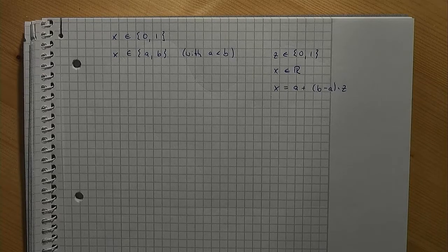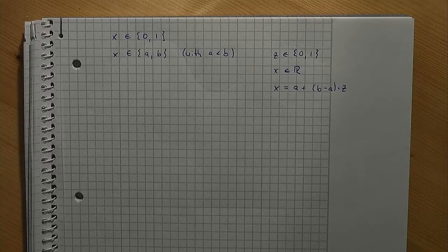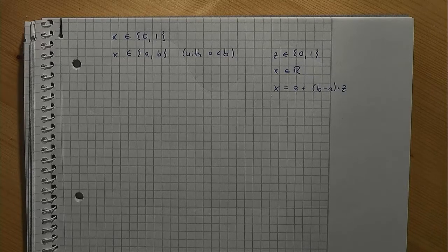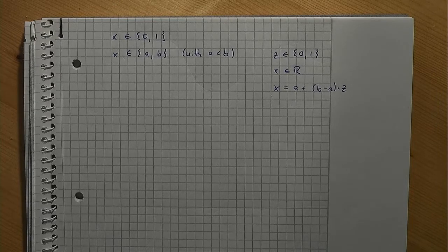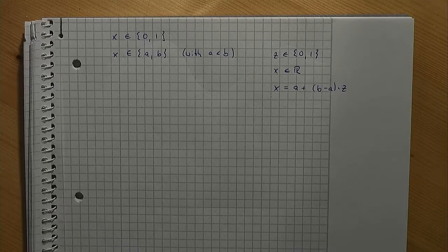Binary decision variables come in handy in particular for modeling yes or no decisions. A famous example for using binary variables is the knapsack problem. The story is the following: imagine that you want to go hiking. You can then carry a knapsack to bring with you all kinds of items. Let n be the number of items you may put into your knapsack.